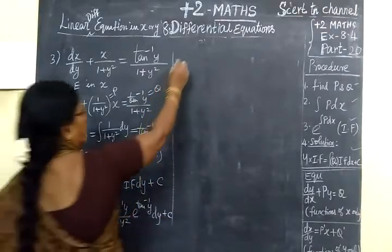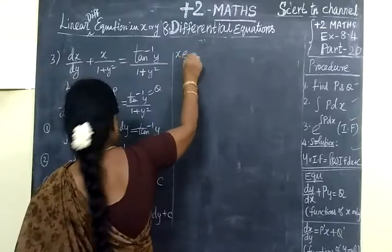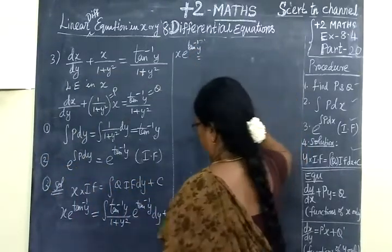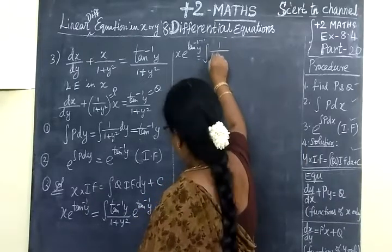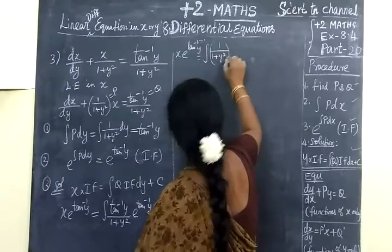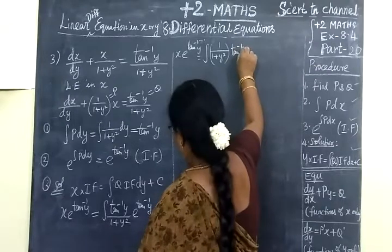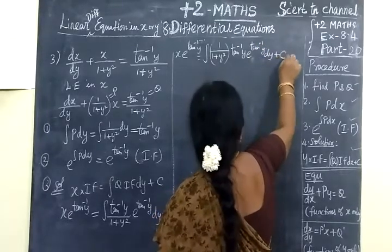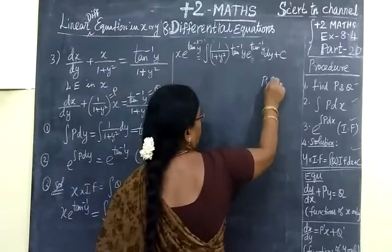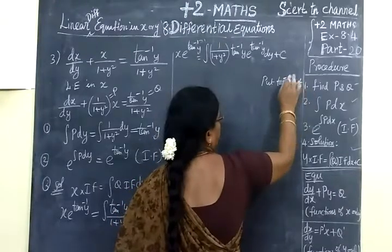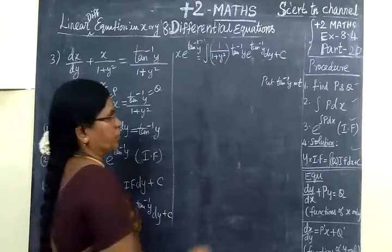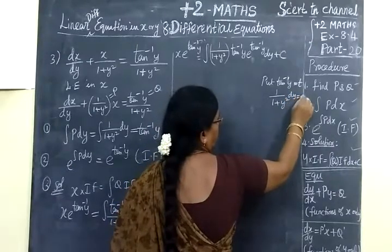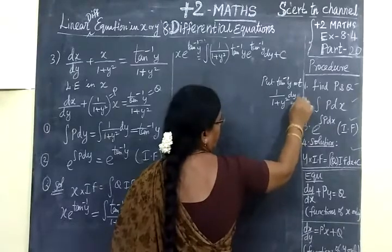Now we integrate. So x times e to the power of tan⁻¹y equals the integral of (1/(1+y²)) times tan⁻¹y times e to the power of tan⁻¹y dy plus c. Put tan⁻¹y equal to t. So 1/(1+y²) dy equals dt.